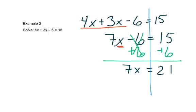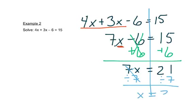The very last step is always that multiplication or division — whatever number is in front of the x is being multiplied by x. The opposite of multiplication is division, so we'll divide by 7. And we have x equals 3.